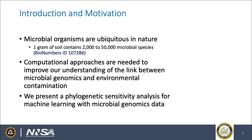So the introduction and motivation of this work: we are in the bioengineering department where we study microorganisms and microbial communities. And we know that microbial organisms are incredibly ubiquitous in nature. Some estimates have been made that a single gram of soil contains between 2,000 to 50,000 different microbial species — that's an incredible amount of microbial diversity found in natural environments.